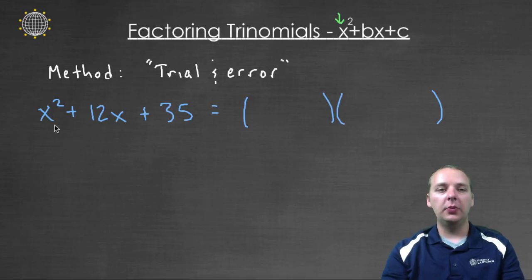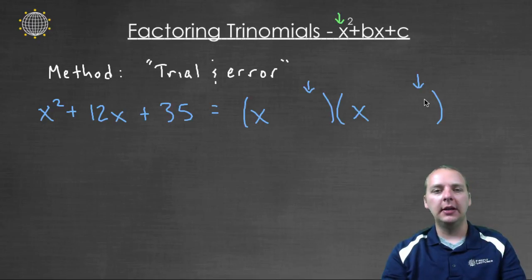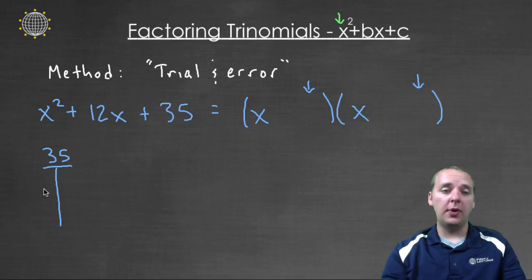So what times what would give me x squared. It has to be x times x. Now for the last two numbers that go here and here, this is really where the math comes in. So whatever those two numbers are, they're going to have to multiply to thirty five. So what I'll typically do is I'll make a quick little chart, and I'll make up all the, I'll like one times thirty five, and five times seven. I think that's it.